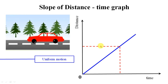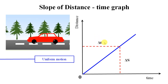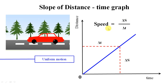To find the slope, we take a horizontal line to find the time taken and a vertical line to find the distance covered. Assuming the distance covered is Δs and the time taken is Δt, the ratio gives Δs/Δt, which is distance divided by time. Distance divided by time is speed — so the slope of the distance-time graph gives speed, which is a very important concept.